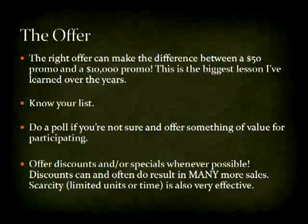Know your list. Do a poll — find out what they're interested in, what they need help with, what their experience level is. Learn as much as you can about your list, then tailor the information you give them, the help you give them, and the products you promote to the results of that poll. Discounts are huge — some of my best promotions have been because I offered a good product plus a discount they couldn't get anywhere else and had to order through my affiliate link. I always contact the product owner and ask if I can give my list a discount. A lot of them will create a new page specifically for you. Definitely try to get a discount every chance you get.